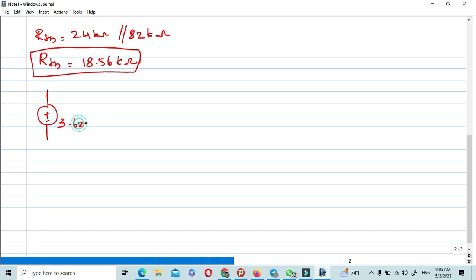This is the final circuit. VTH equals 3.62 voltage. Apply KVL, so now 3.62 voltage minus 18.56 into IB.